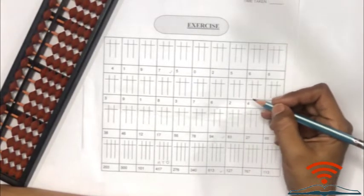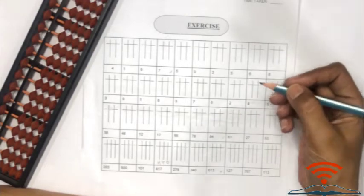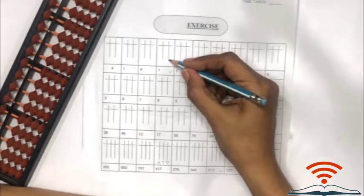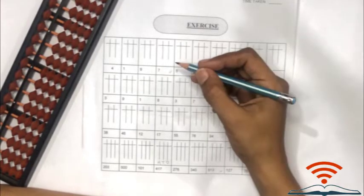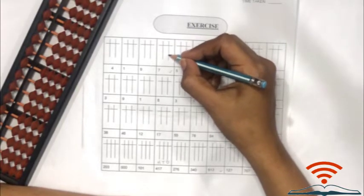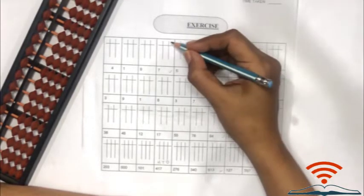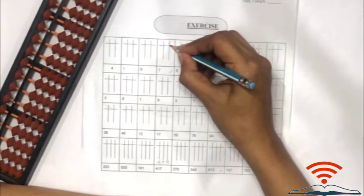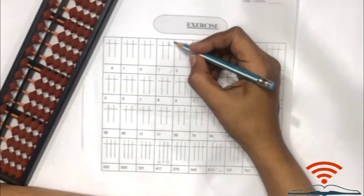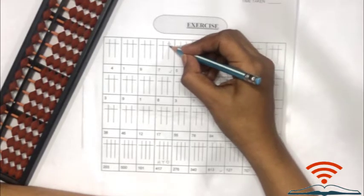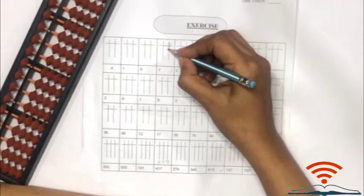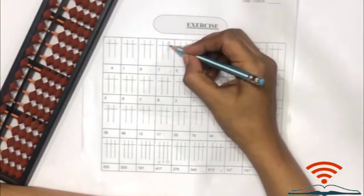Here you can see number seven. Number seven belongs to the ones family, so we will make beads on the ones rod. Draw a bead above the beam as it represents five, and then below the bar, six and seven. Five, six, seven. It's seven.